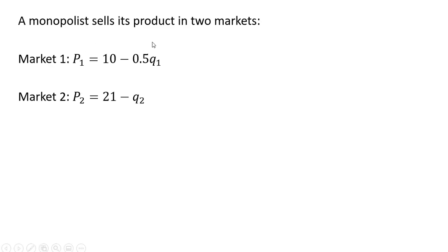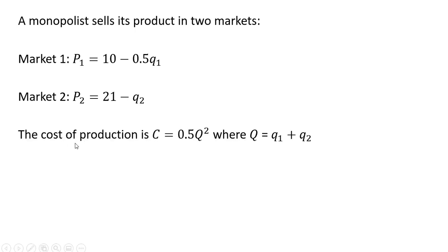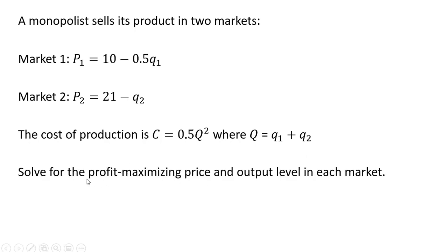A monopolist sells its product in two markets. In market one, the inverse market demand is given as follows, and in market two we have a slightly different inverse market demand. The cost of production is given by C equals 0.5Q squared, where Q represents the output sold in market one plus the output sold in market two.